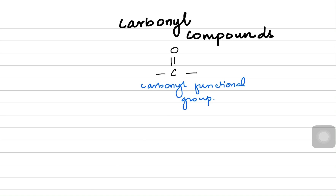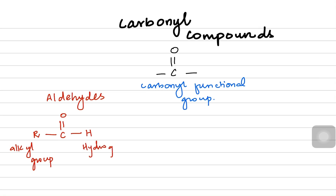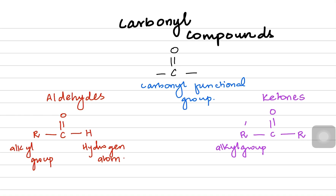The only two functional groups which have carbonyl as a separate entity in them are aldehydes and ketones. Aldehydes have the carbonyl group always on the terminal — you can have an alkyl group on one side of the carbonyl and a hydrogen atom on the other side. Ketones have a carbonyl not on the terminal but rather in the middle of the chain, with two alkyl groups (R groups) on both sides.